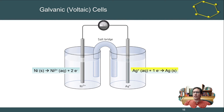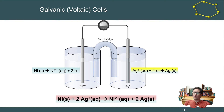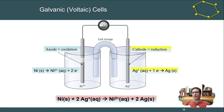On the right side, silver ions in solution are gaining electrons coming from the nickel half-reaction and becoming solid silver. The overall reaction is: solid nickel plus silver ions makes nickel ions and solid silver. Remember, the anode is where oxidation occurs — electrons appear on the product side. At the cathode, electrons appear on the reactant side. Make sure you can quickly identify those so you're not slowed down working problems.